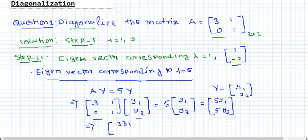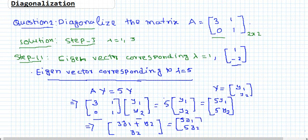Multiplying out, we get 3y1 + y2 = 5y1 and y2 = 5y2 as our two equations. Wait - I made a mistake here. I incorrectly used lambda = 5 instead of lambda = 3. I was distracted by a message from my authority. I am sorry for that.